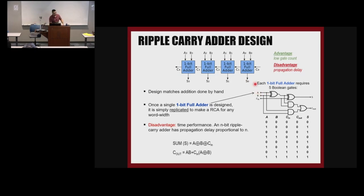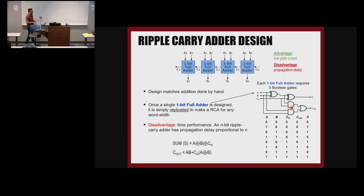You can connect one-bit full adders in series — the carry-out of one feeds the carry-in of the next — to get multi-bit addition. In this case with four of them, we get four-bit addition. The advantage is a low gate count of just five gates per bit, but the disadvantage is propagation delay. The gate delay for one full adder is three gate delays for the carry-out path: XOR, then AND, then OR.